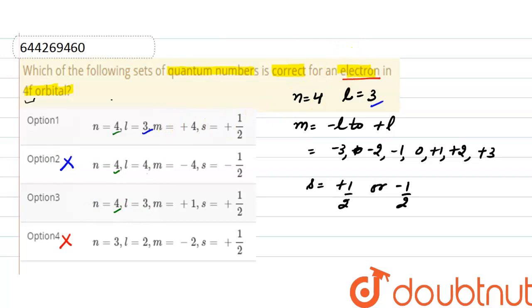Now moving on to the value of m. The value of m possible are minus l to plus l. So in option first the value is plus 4 which is not possible, so option first is incorrect.